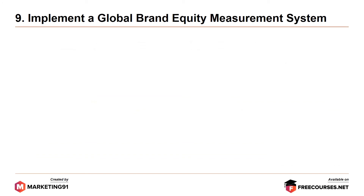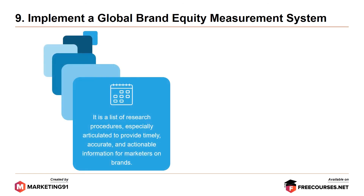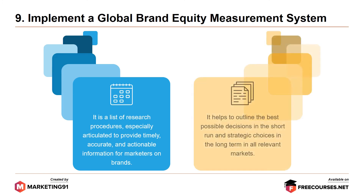Moving on to the ninth commandment: implement a global brand equity measurement system. It is a list of research procedures especially articulated to provide timely, accurate, and actionable information for marketers on brands. It helps to outline the best possible decisions in the short-term and strategic choices in the long-term in all relevant markets.